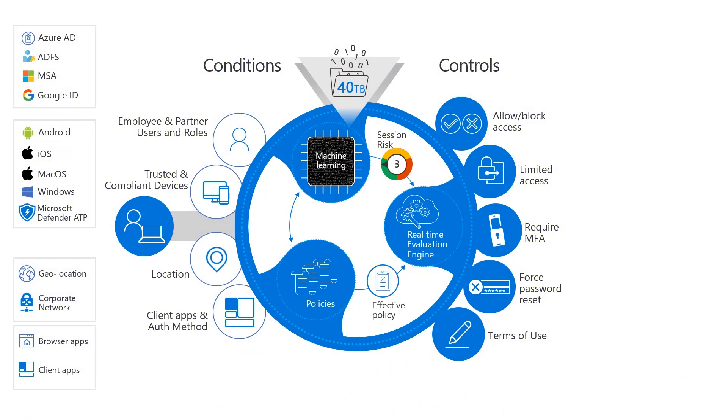Everything pivots around that user identity. You know what their activities are, what devices and locations they're using. And then we leverage that information in conditional access policy to be able to enforce things like multi-factor authentication or require a compliant device. You can see how conditional access policy is really broken up into two pieces.